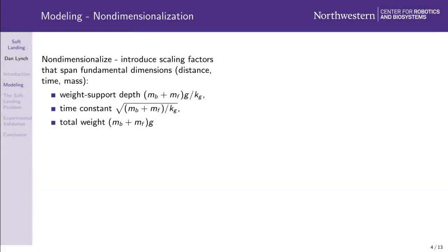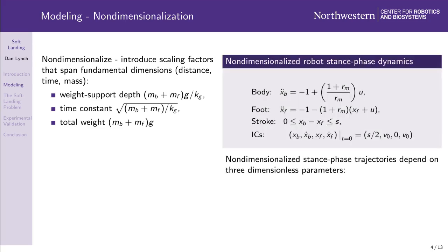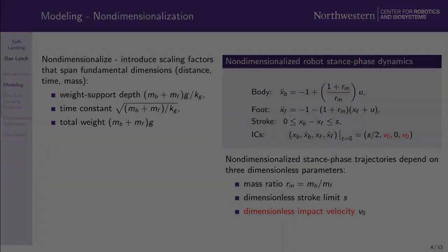To ensure that our results are generalizable, we non-dimensionalize our model by introducing three scaling factors that span the fundamental dimensions of a mechanical system, which are distance, time, and mass. The resulting non-dimensionalized model is shown on the right. It only depends on three parameters: the mass ratio, the dimensionless stroke limit, and the dimensionless impact velocity. One noteworthy consequence of our choice of non-dimensionalization is that the minimum depth required to support the weight of the robot at rest is now simply 1, and represents the least possible foot penetration depth for our model.